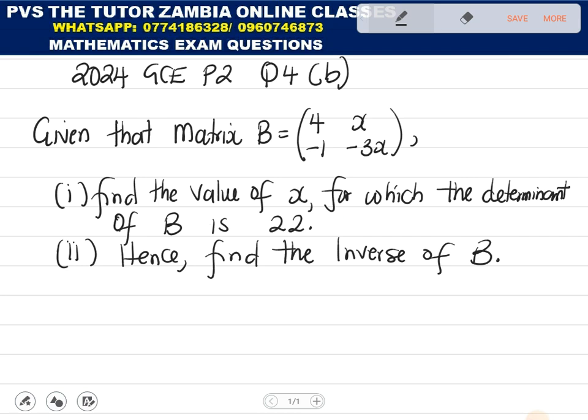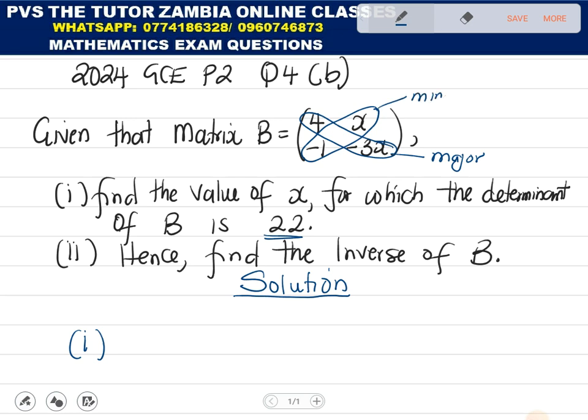How do we work out the value for the determinant? What we need to recognize here is that once they give you the determinant as any number, what they want you to do is from the given matrix, find the determinant again. How do we do that? Major diagonal elements, minor diagonal elements. It will always be major minus minor. So the product of the major minus the product of the minor.